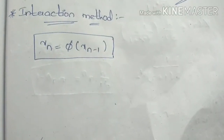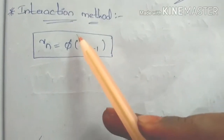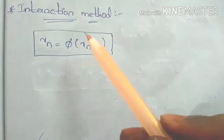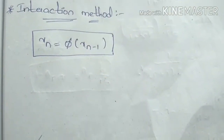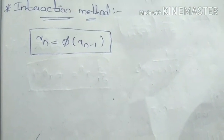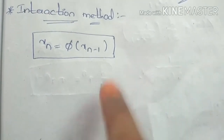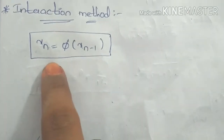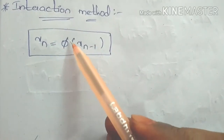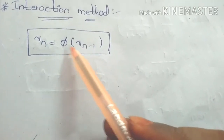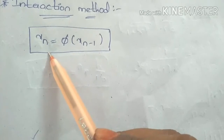Hi friends. My topic is the iteration method. This is the fourth method — the Newton-Raphson method and the bisection method. Now this method uses the first formula: xn equals phi of xn minus 1. This formula is used to find roots.